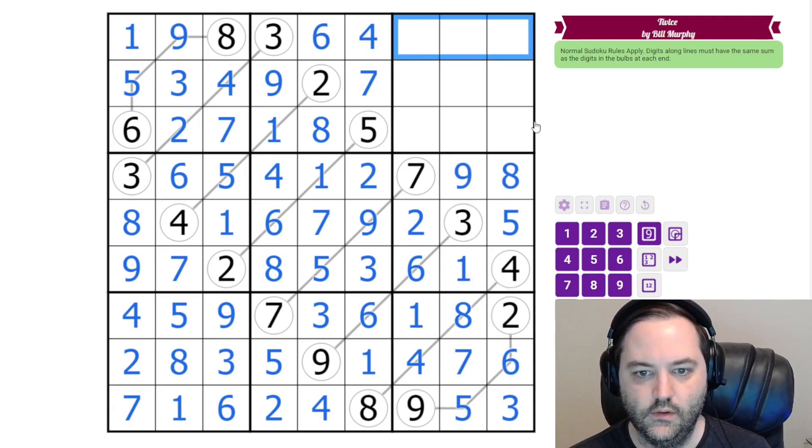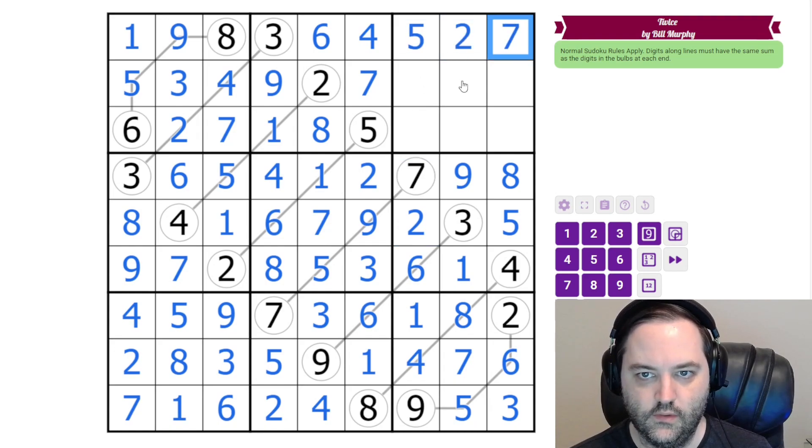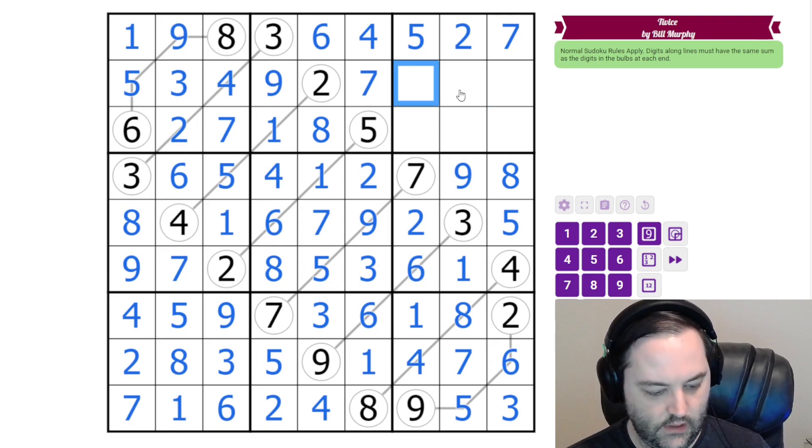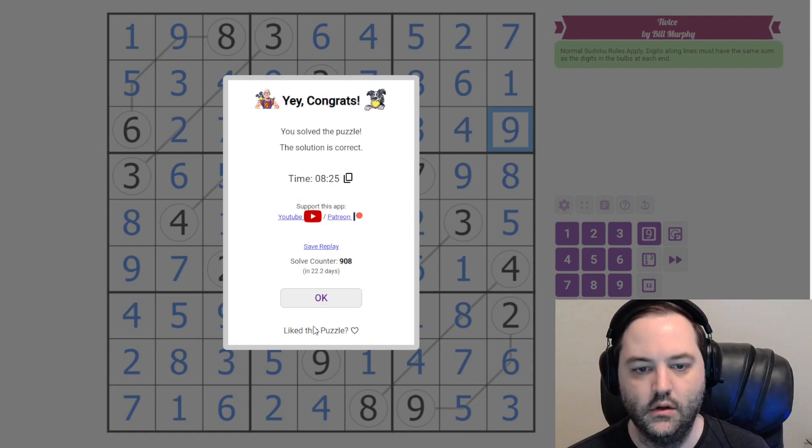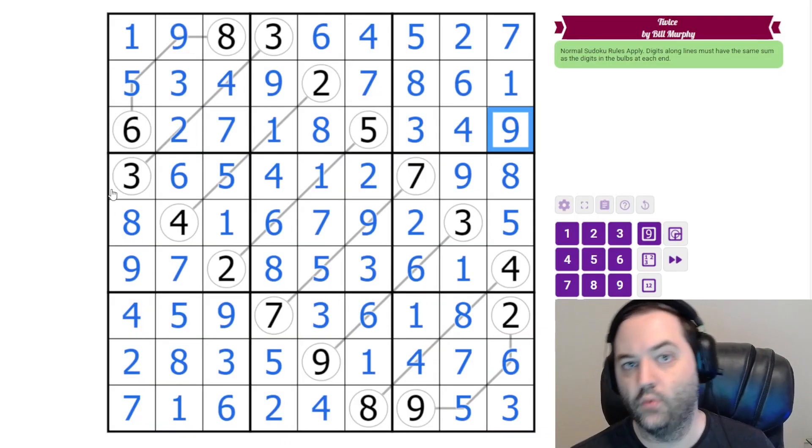So these are two, five, seven. We've got a five here, two, seven. These are one, six, and eight. An eight here, six and one, and then three, four, nine, three, four, and nine. And that is the solution to twice by Bill Murphy.